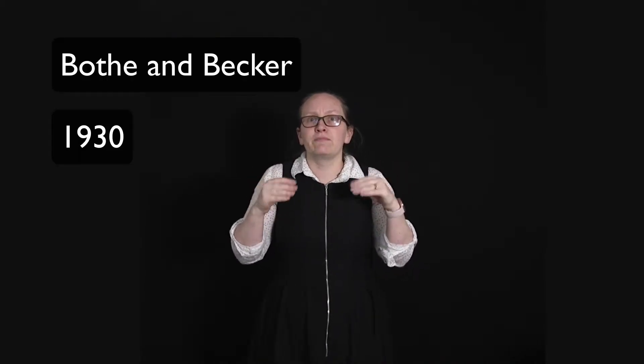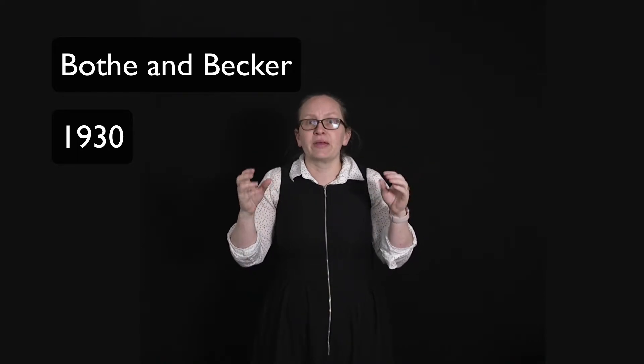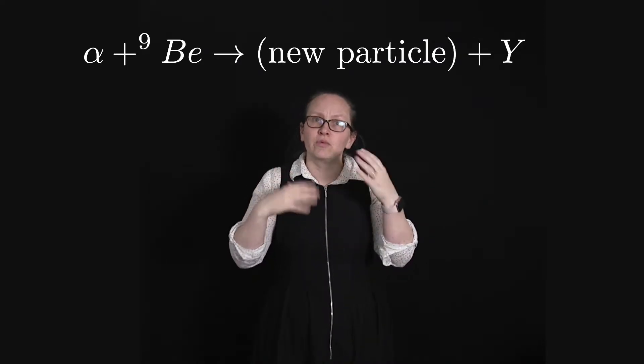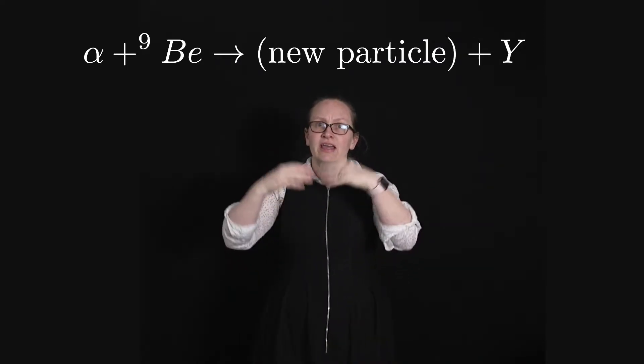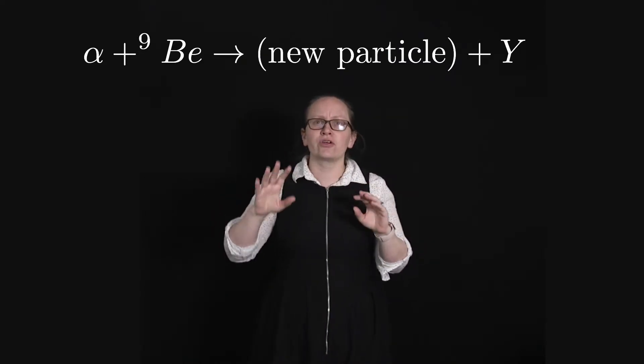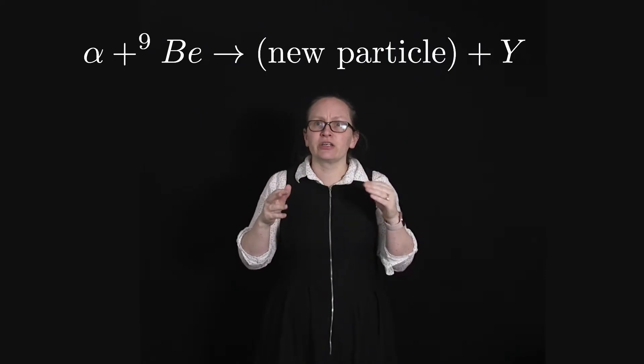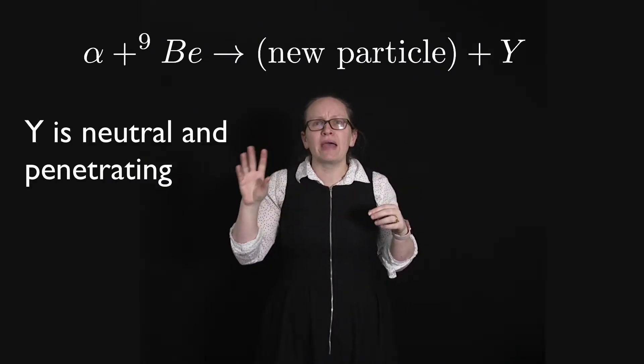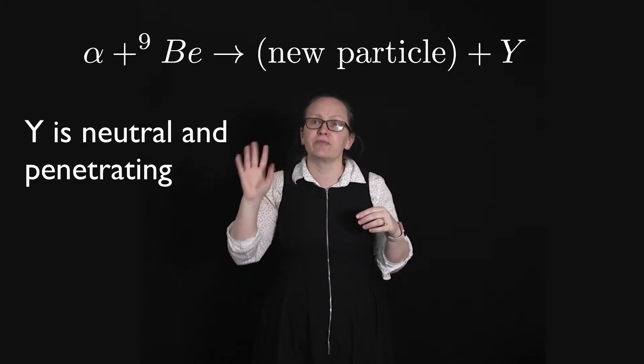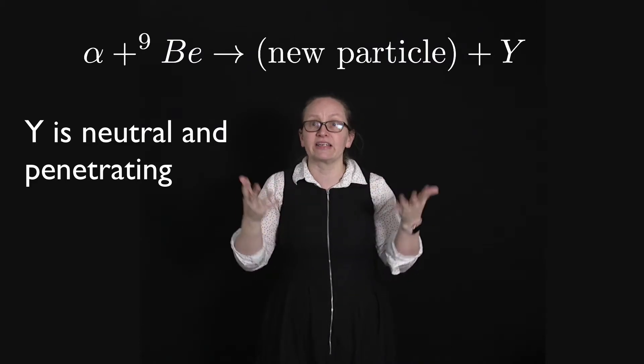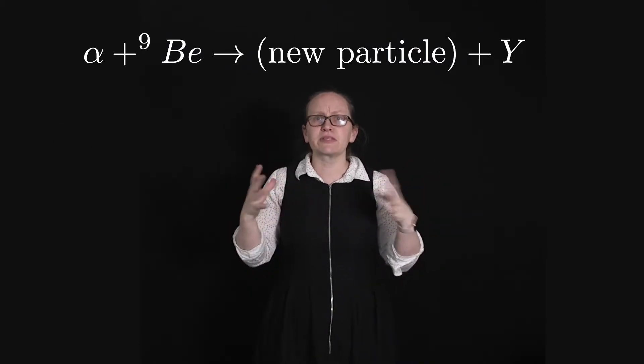Some hints to what was actually in the nucleus came in 1930, when Bieth and Becker conducted an experiment where they bombarded beryllium and some other light elements with alpha particles. They found that a new isotope was produced and also some kind of radiation, which we'll call Y. This radiation was neutral and it was more penetrating than any gamma radiation which had been observed before. Gamma radiation is a form of electromagnetic radiation.